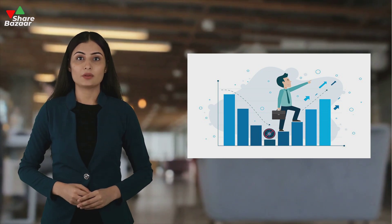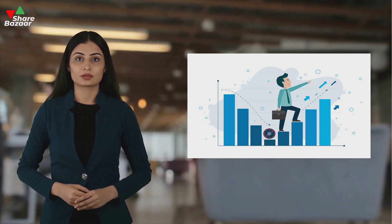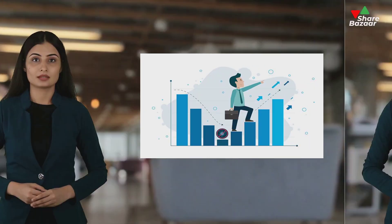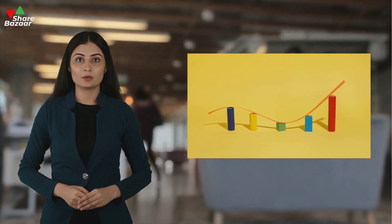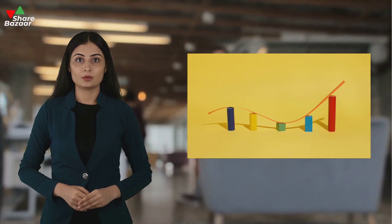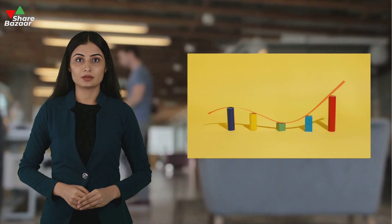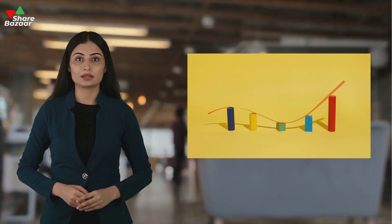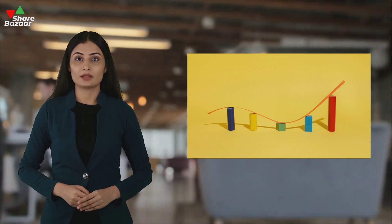The 50-day moving average is one example of this tool, typically used to identify bullish and bearish trends. The 50-day MA works by adding up the closing prices for the past 50 trading sessions, then dividing that sum by 50.